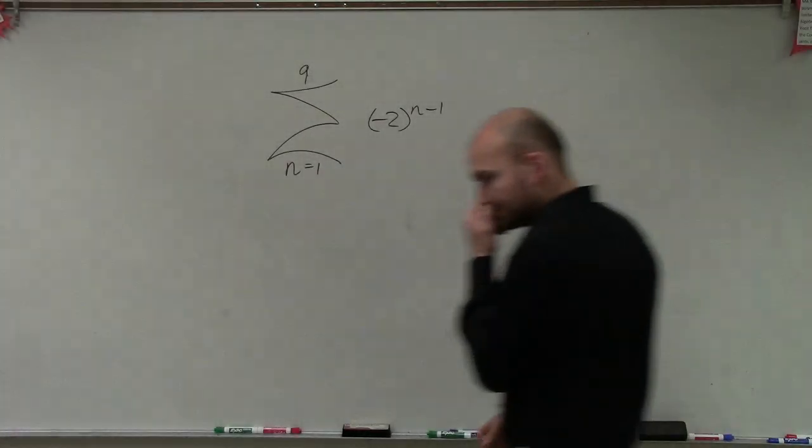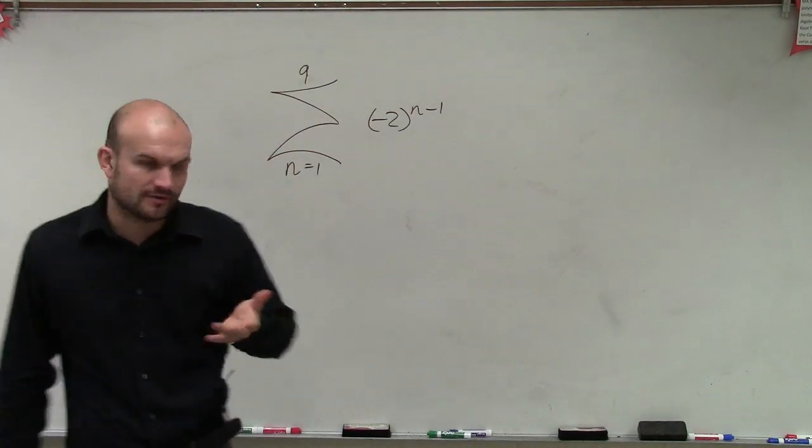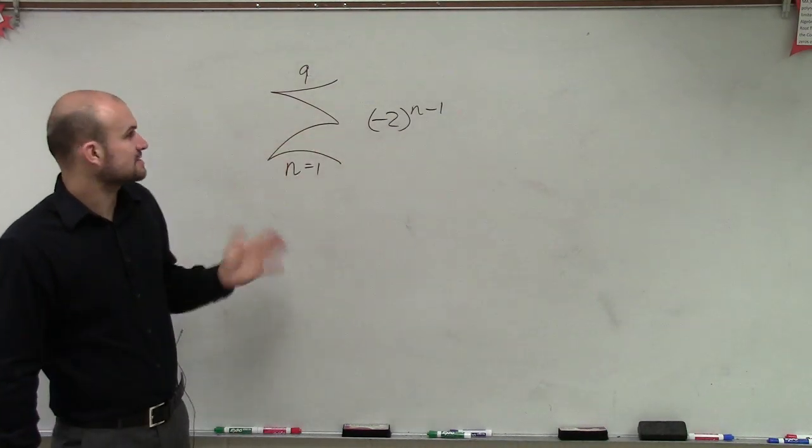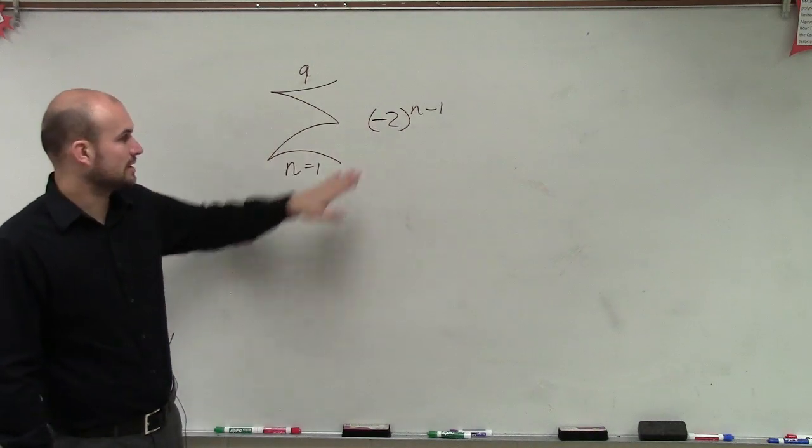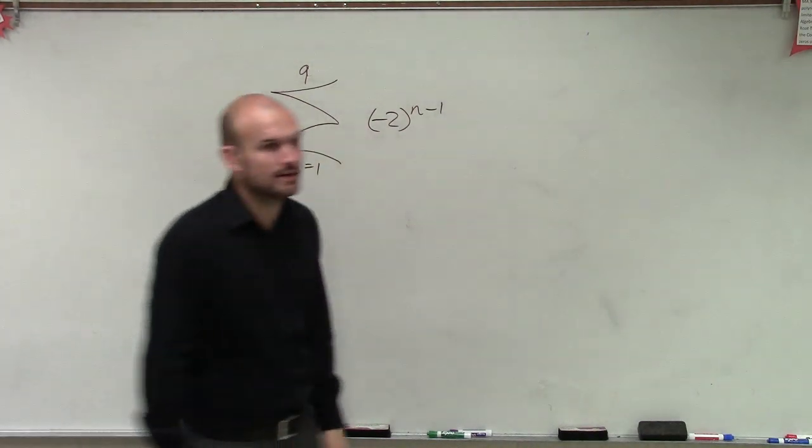So there's a couple things we need to know to do this problem. First of all, we are given the partial sum of 9, where n is going to start at 1. And here's our rule, negative 2 to the n minus 1.